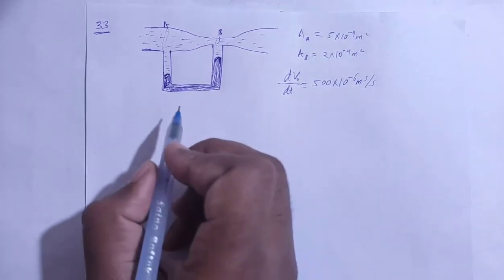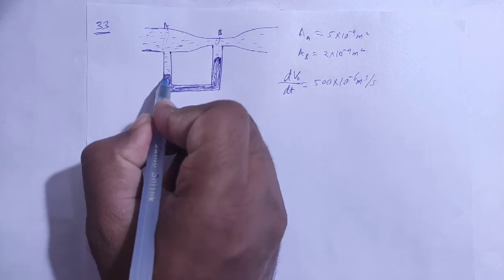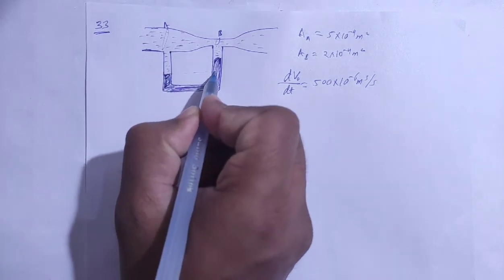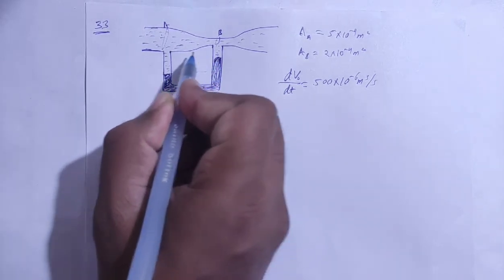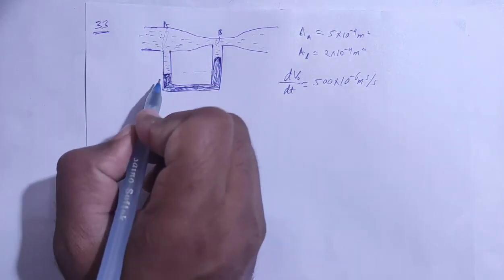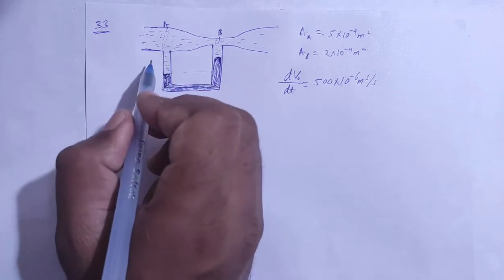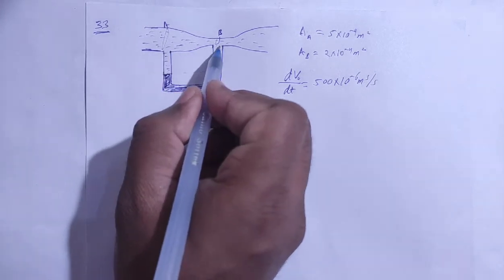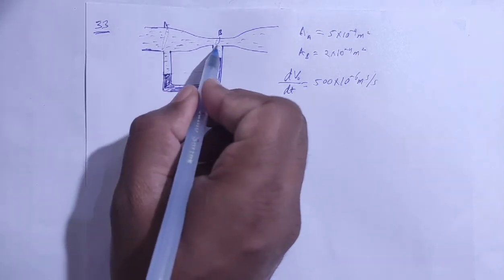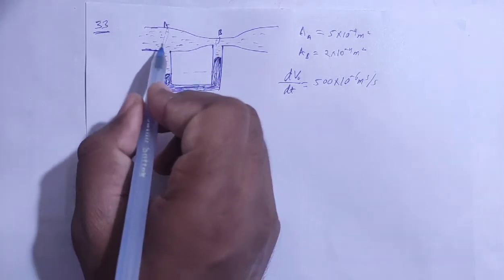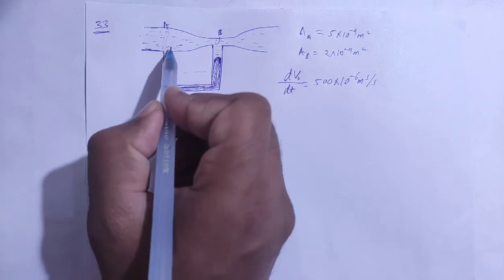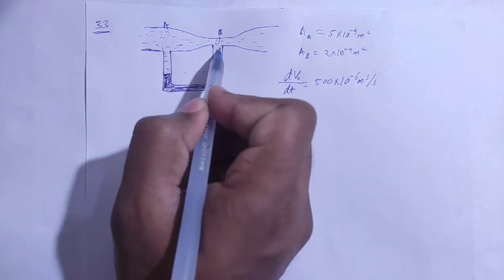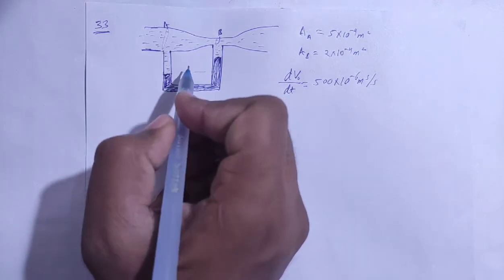Now, the question asks for the difference of mercury level. If there is no flow, the mercury is at the same level. But when there is flow, one place has more pressure and one place has less pressure, causing the mercury levels to differ.